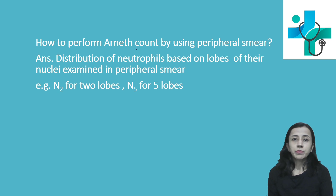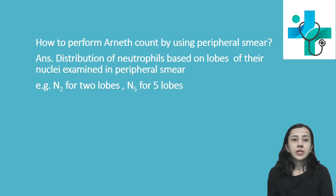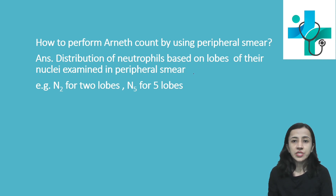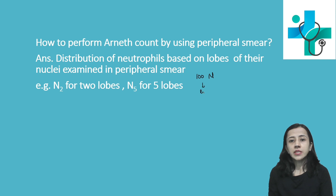How to perform Arneth count by using peripheral blood smear. To perform Arneth count, the distribution of neutrophils is examined based on lobes of the nuclei in the peripheral blood smear. Here we have to examine at least 100 neutrophils.